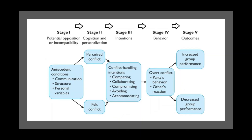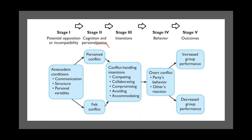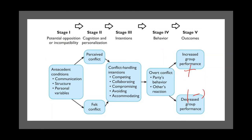Let's revise all five stages. In the first stage, conflict may arise from communication, structure, or personal variables. In the second stage, the conflict should be perceived. In the third stage, conflict can be handled through competing, collaborating, compromising, avoiding, or accommodating. In the fourth stage, the parties' statements, actions, and reactions are seen as behavior. And lastly, the consequences of the conflict can be positive or negative — if positive, it will increase group performance; if negative, it will decrease group performance.